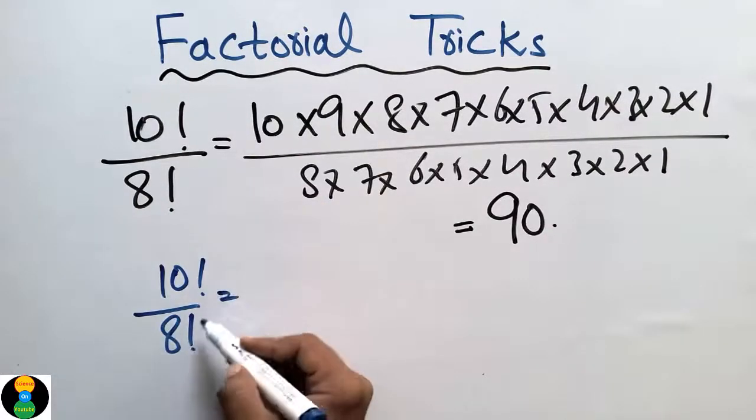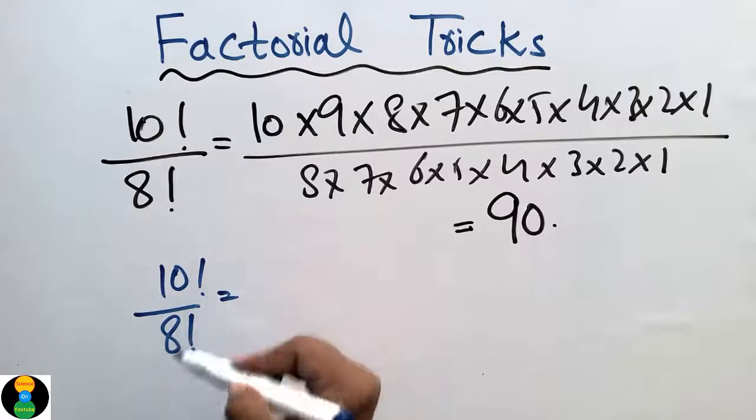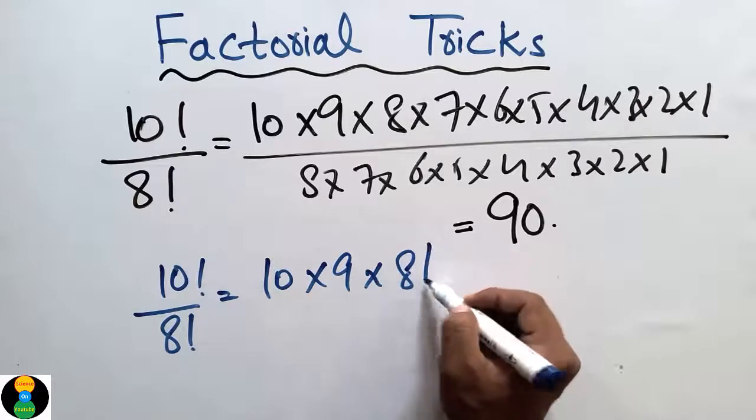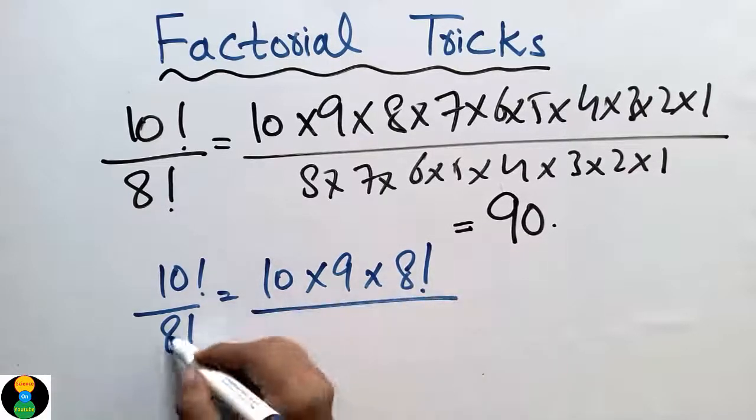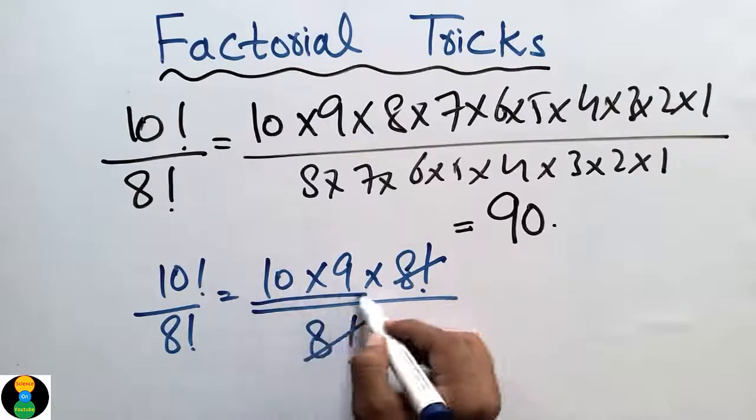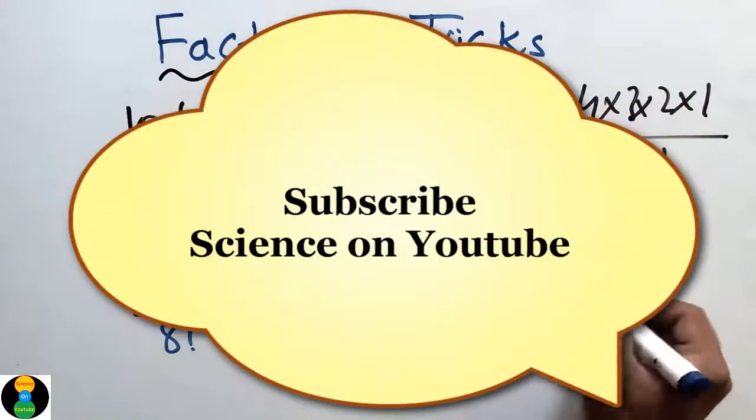By expanding 10 factorial: 10 into 9 and 8 factorial. We stop at 8 factorial here. 8 factorial now will be cancelled with 8 factorial, so we only remain with 10 into 9 which comes out to be 90. These are the tricks used in factorial.